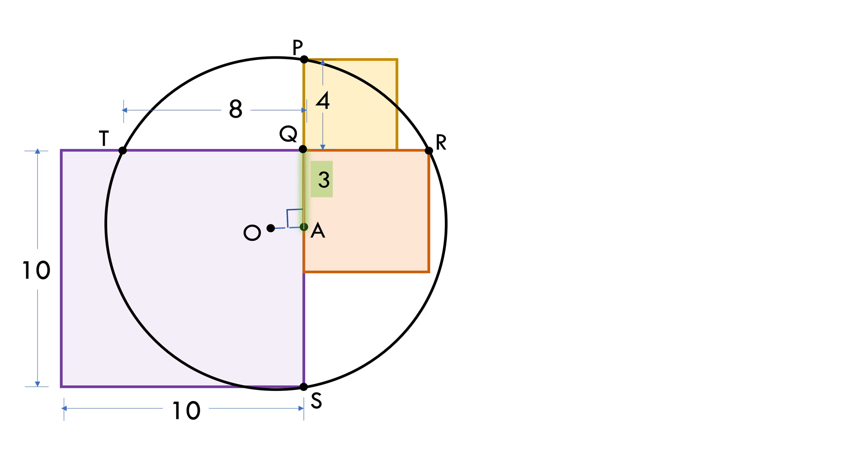Now it's time to drop a perpendicular from center O to the chord PT. We have found out TQ to be 8 units. Now TR equals TQ plus QR equals 8 plus 5 equals 13 units. Because OB bisects TR, TB equals half of 13 equals 6.5 units.